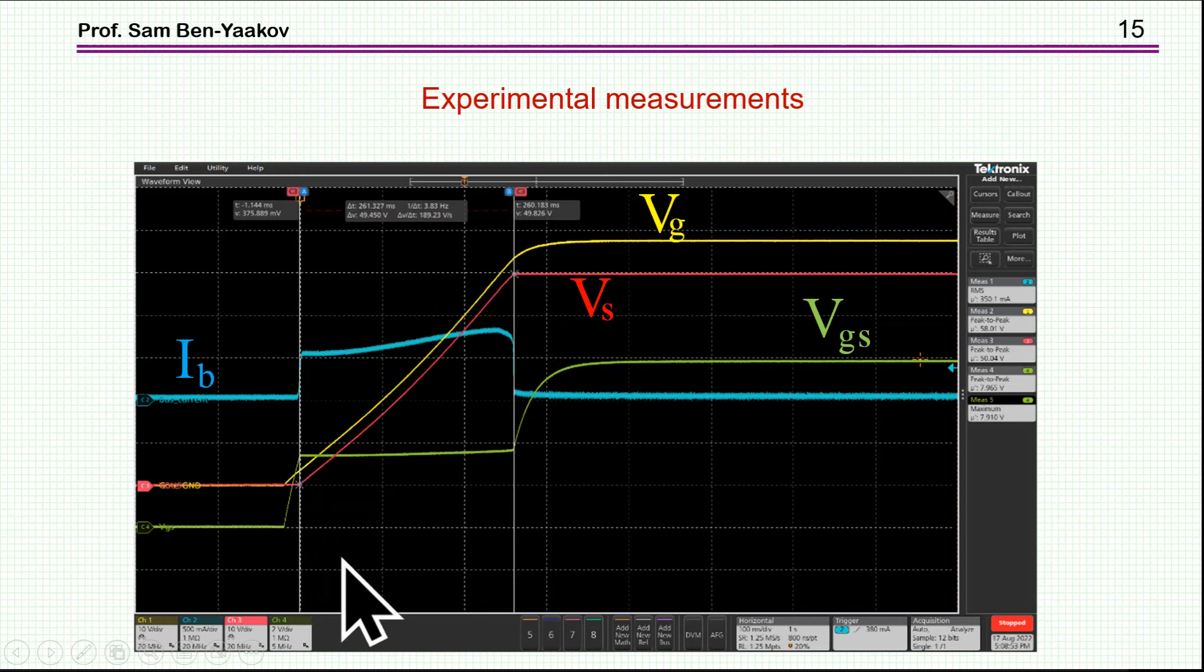And here are some experimental results. What we see here is the voltage across the bank of capacitors. It is not exactly linear because we have been using an X7R capacitor. So the current at the beginning is lower and then it goes up. We see the charging current, which is of course very well controlled, and the voltage of the capacitor.